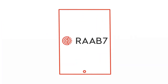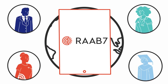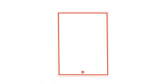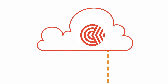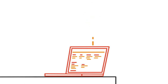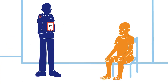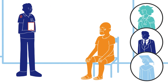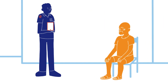RAAB 7 is the latest version of RAAB. With development guided by the Eye Health community since 2018, it is fully digitized, enhancing the accuracy, reliability and security of data. Expanded visual acuity testing and an optional disability module also align outputs to global Eye Health priorities.